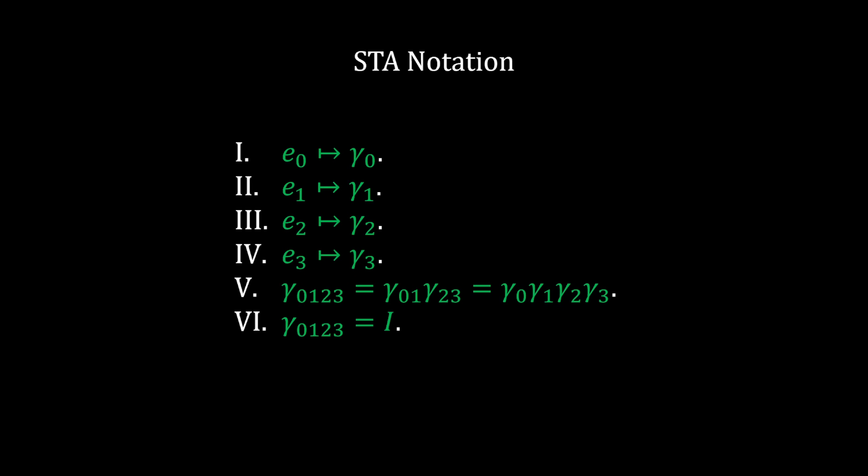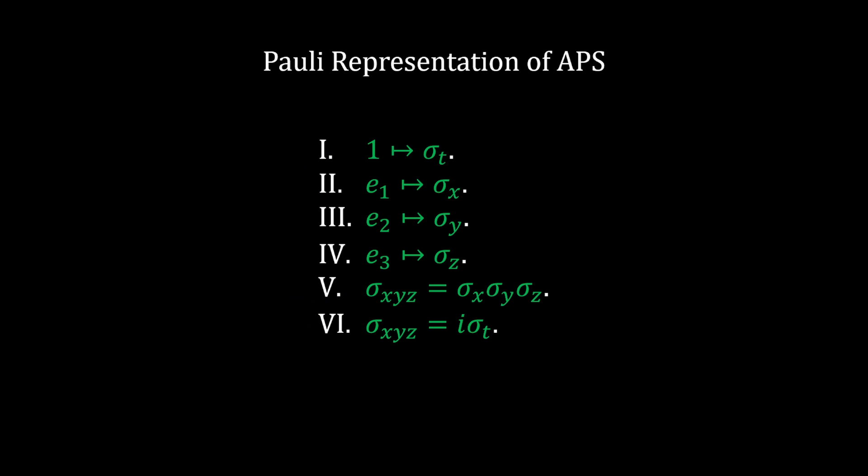Traditional notation for the spacetime algebra will be used in this video, where the bases are relabeled to gamma due to their equivalence with Dirac's gamma matrices. Whenever I talk about the algebra of physical space, I will be using the Pauli representation that I used in my last video. For the sake of simplicity, in this video I will not refer to the algebra of physical space as the Pauli algebra of space — I will just call it the algebra of physical space.